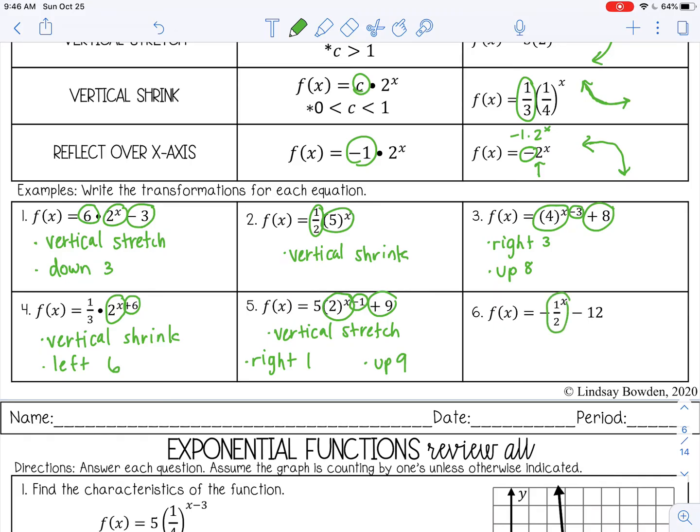The last one, here is our function 1/2 to the x power. So I have a negative out front. That's going to reflect it over the x-axis, which just means it's going to flip down. And then I'm subtracting 12 from the end. That's going to move it down 12.